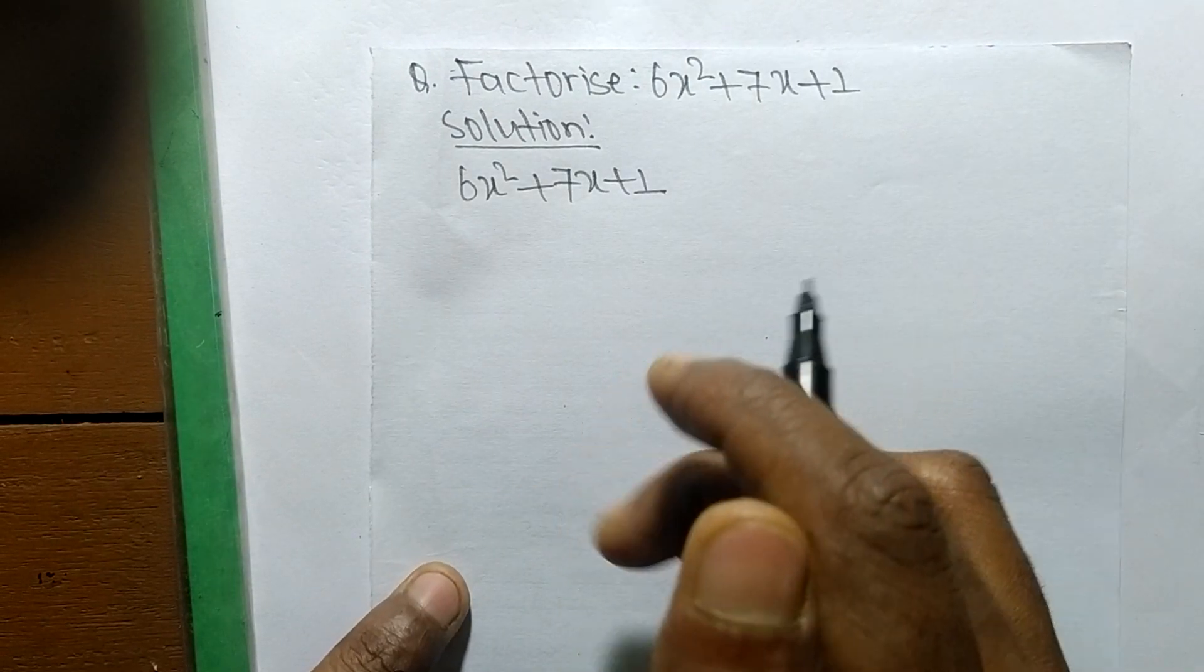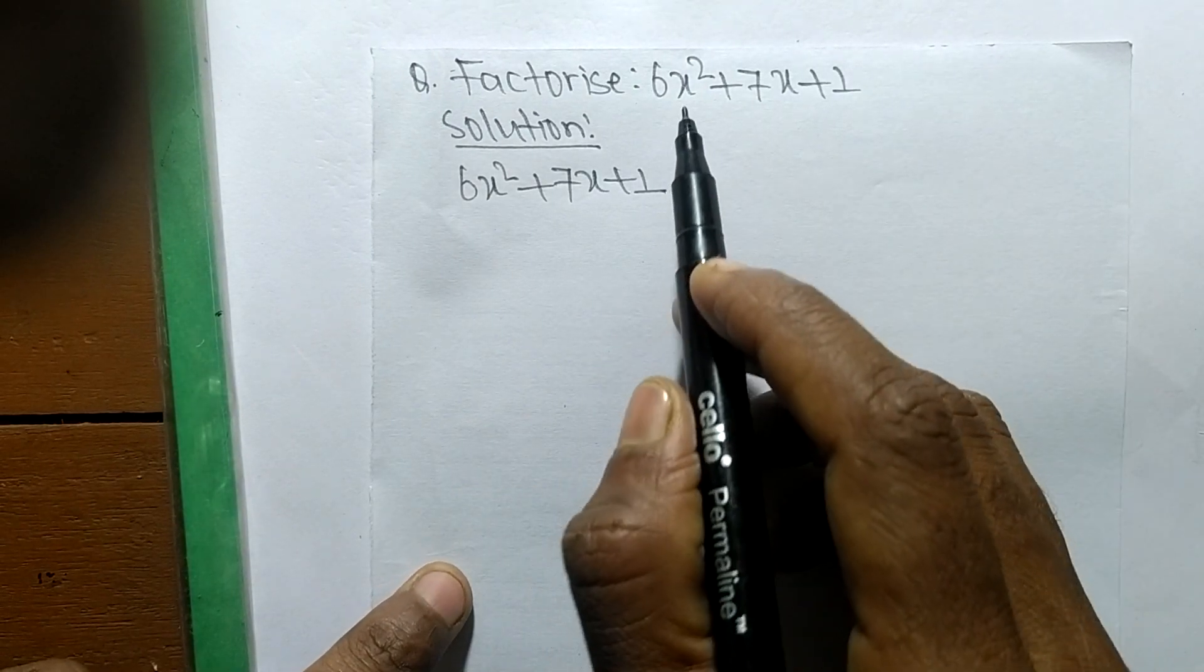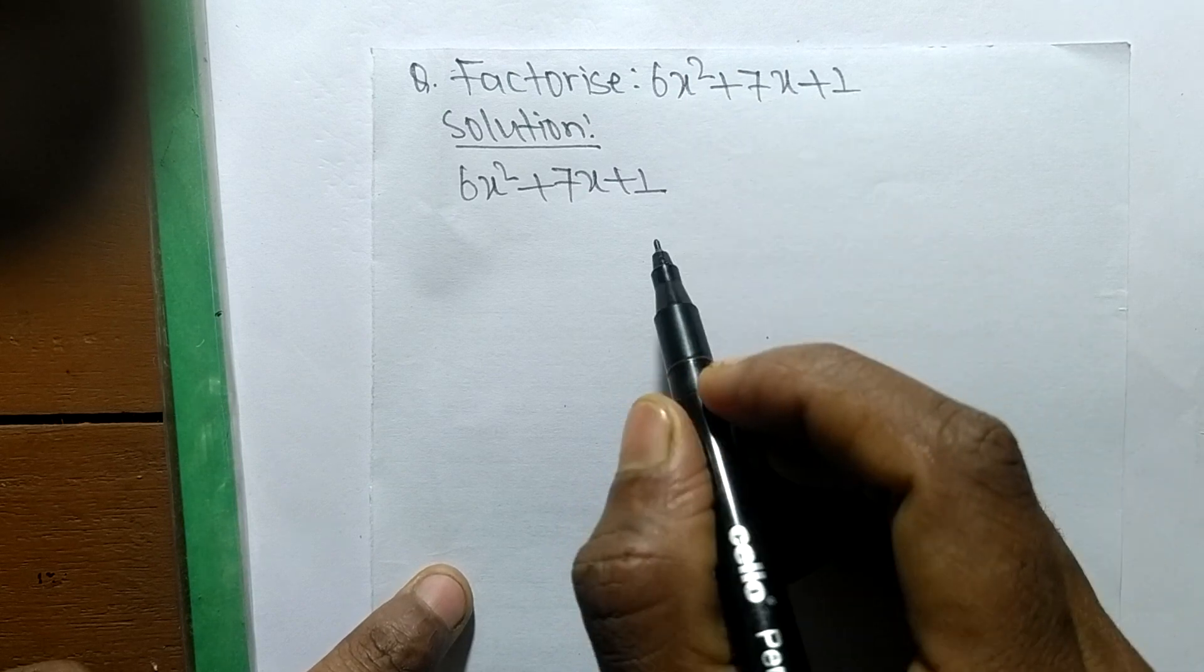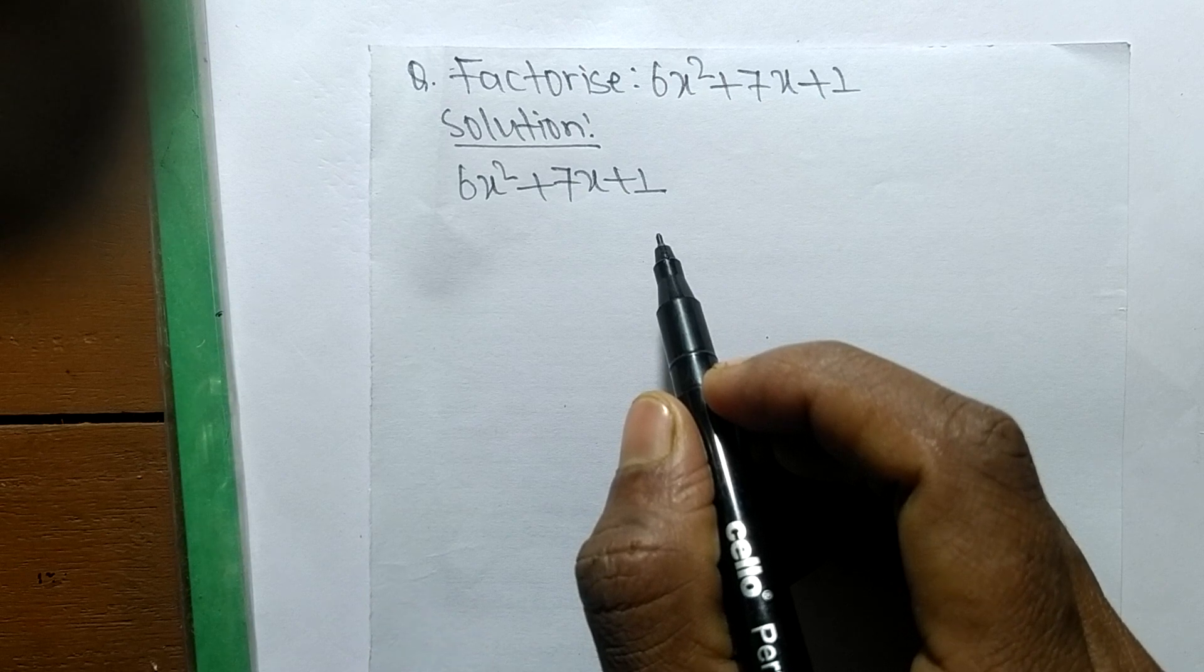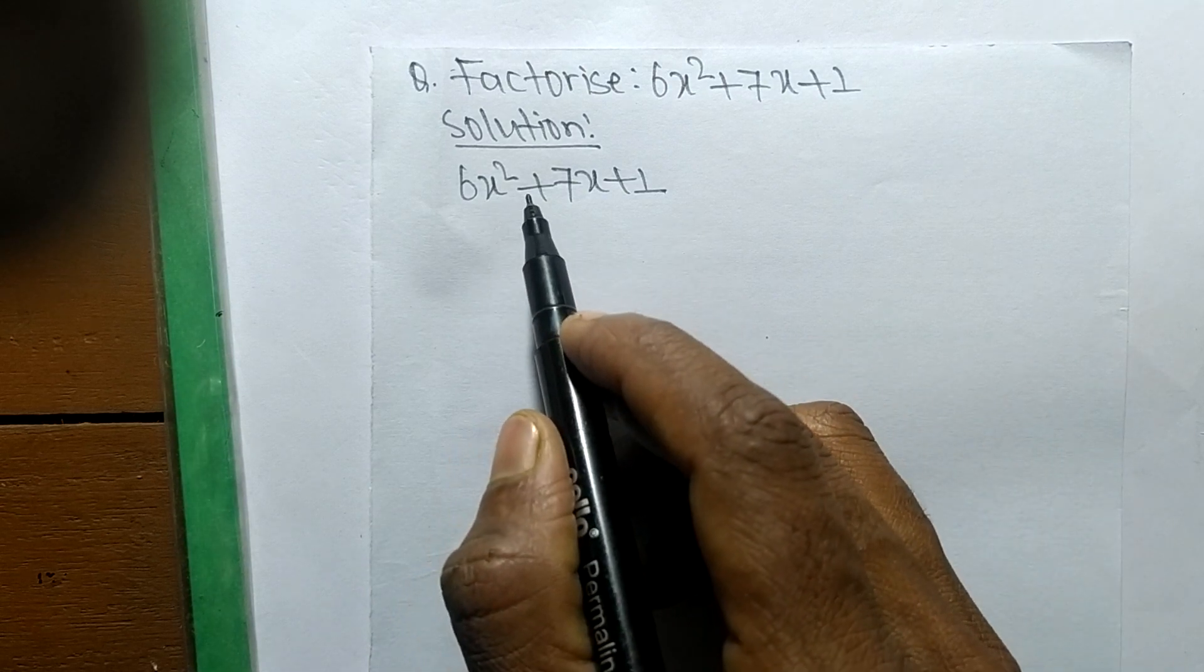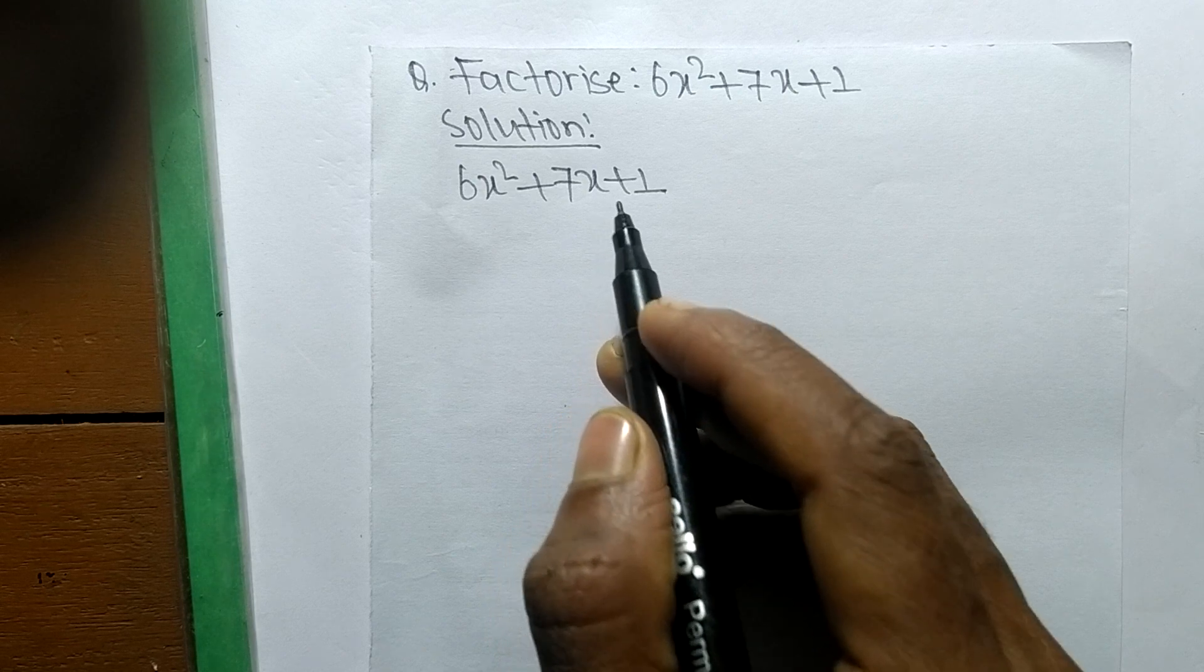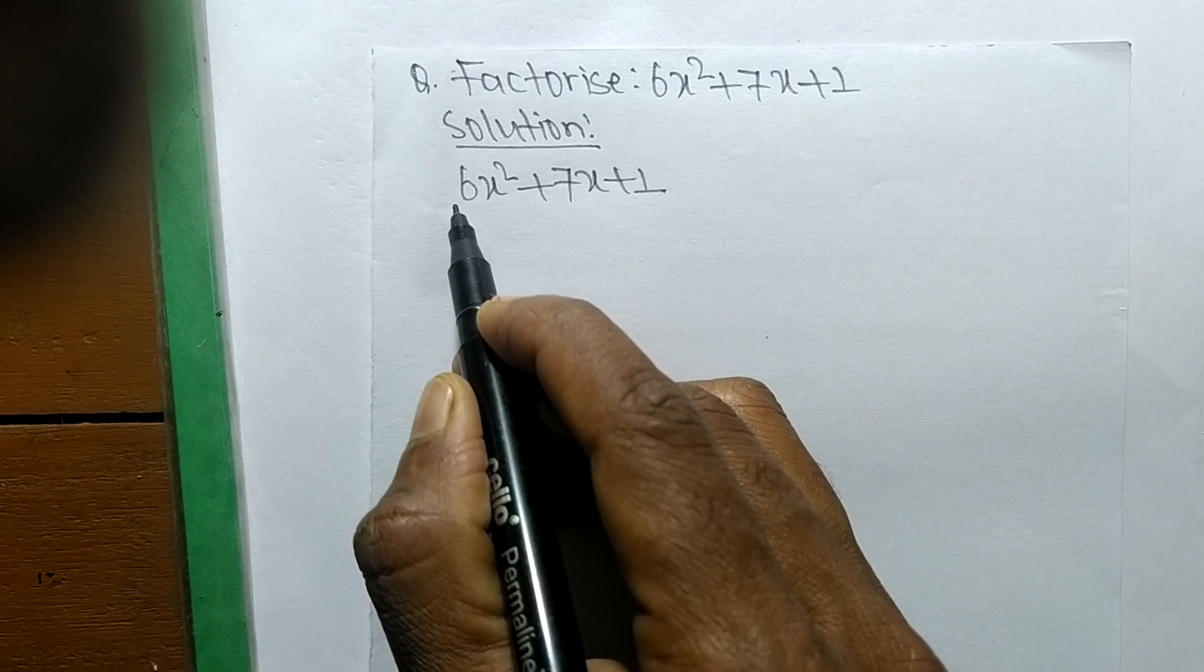So today in this video we shall learn to factorize 6x² + 7x + 1. For the solution of factorize 6x² + 7x + 1, first of all we have to find out the prime factors of first and last number.